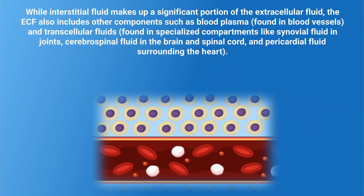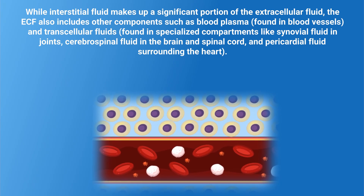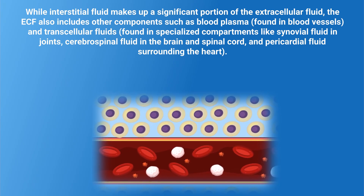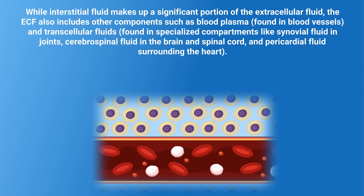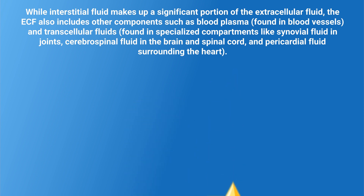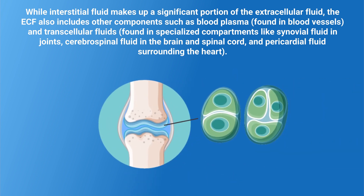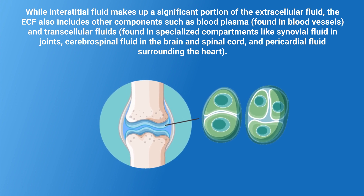While interstitial fluid makes up a significant portion of extracellular fluid, the extracellular fluid also includes other components such as blood plasma, which is found in blood vessels, and transcellular fluids, which are found in specialized compartments like synovial fluid in joints, and cerebrospinal fluid in the brain and spinal cord.